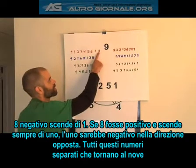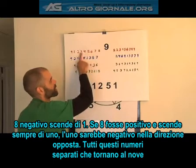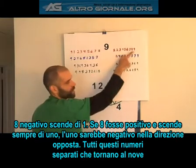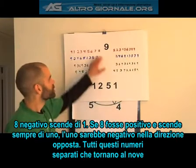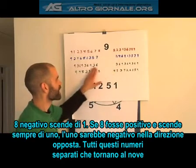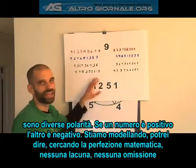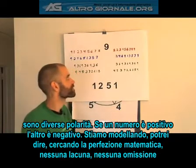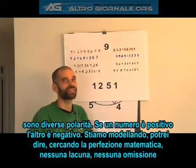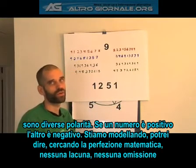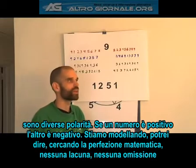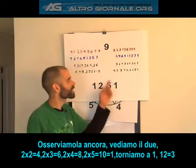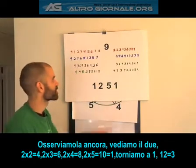If my 8 was positive going in this direction — incrementally down in 1s — my 1 would be negative going in the opposite direction. So any one of these numbers that, together with another, equals 9 — they have different polarity. One is positive and one is going to be negative. What we're modeling here, what we're looking for, is mathematical perfection. There can be no spaces, no gaps, nothing omitted, nothing left out. So let's take a further look into that perfection — let's go to 2.